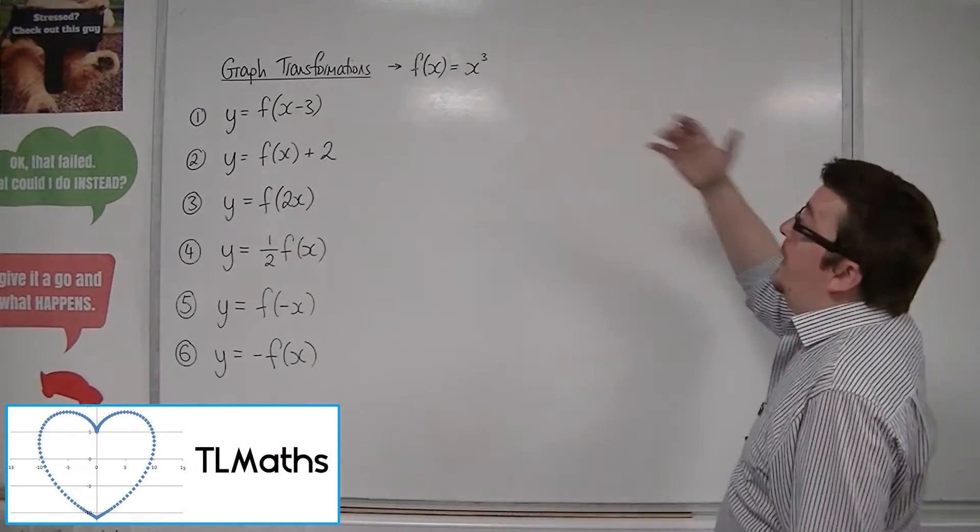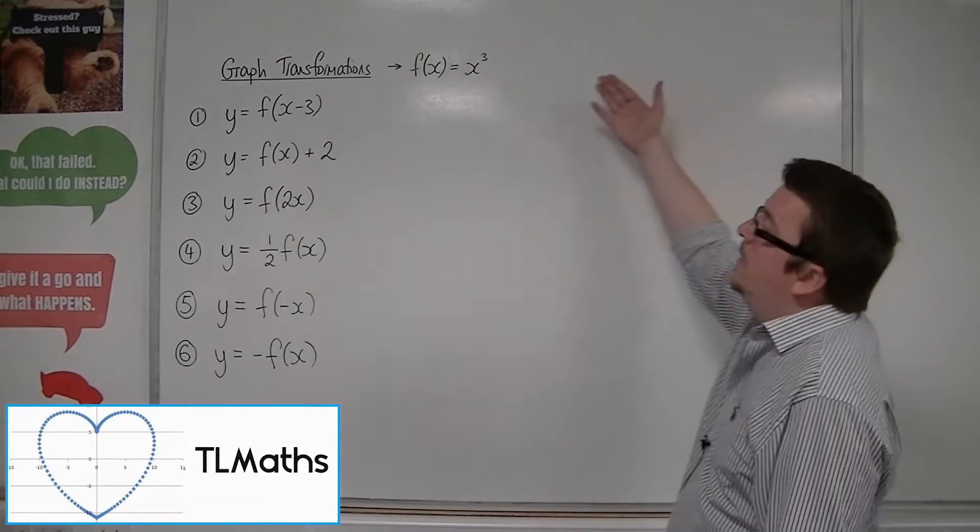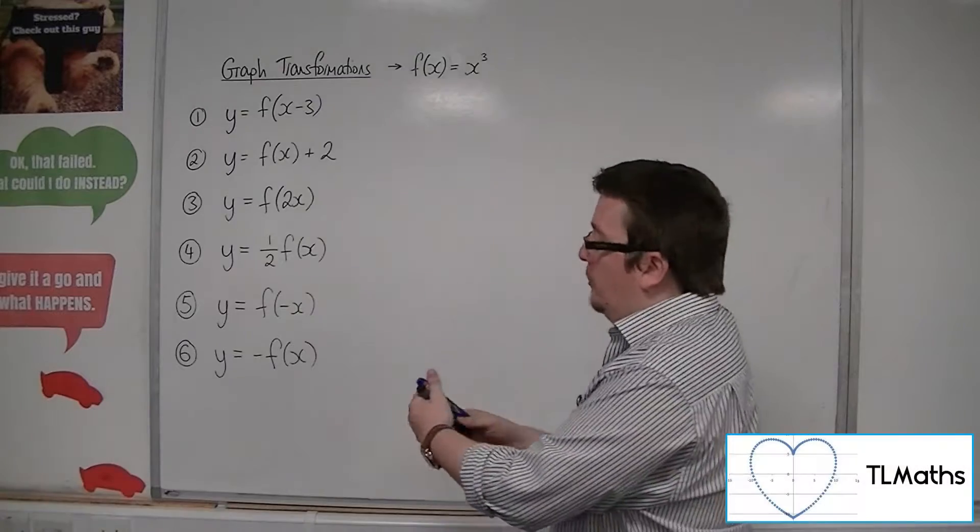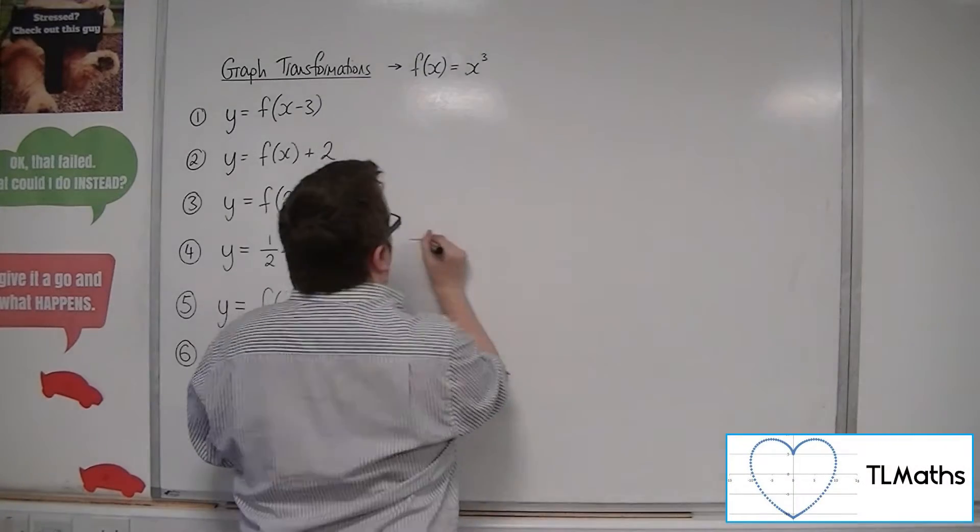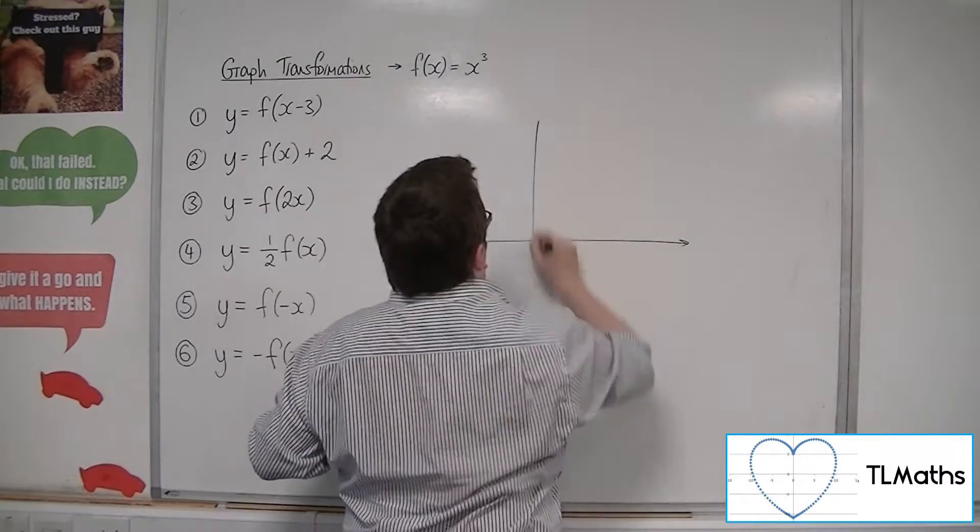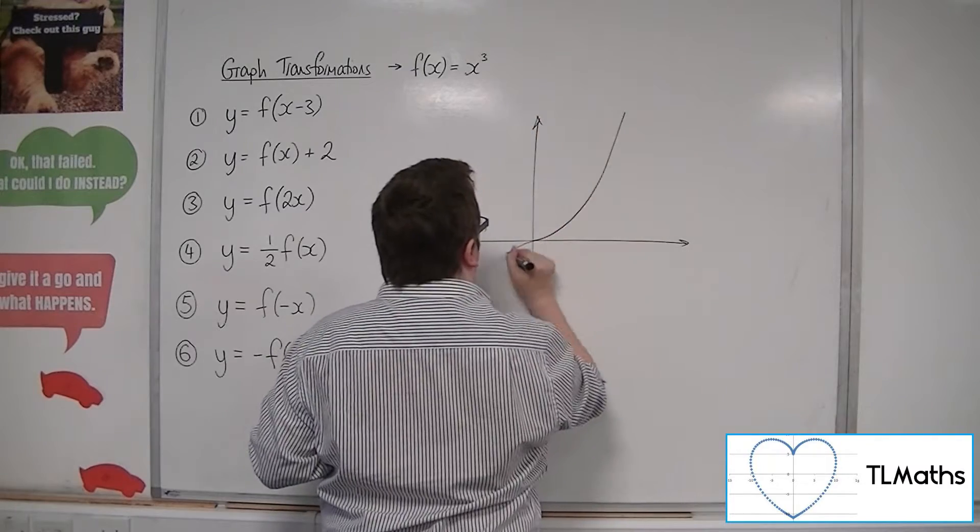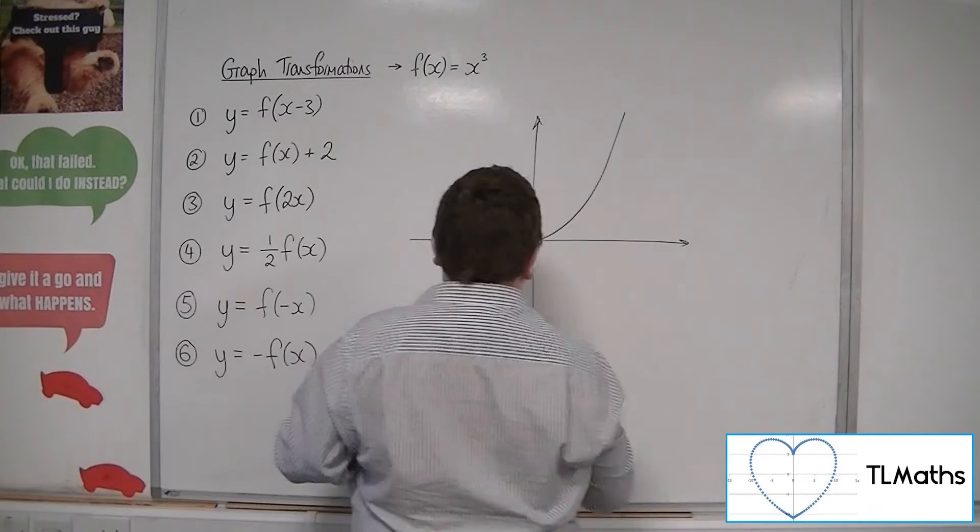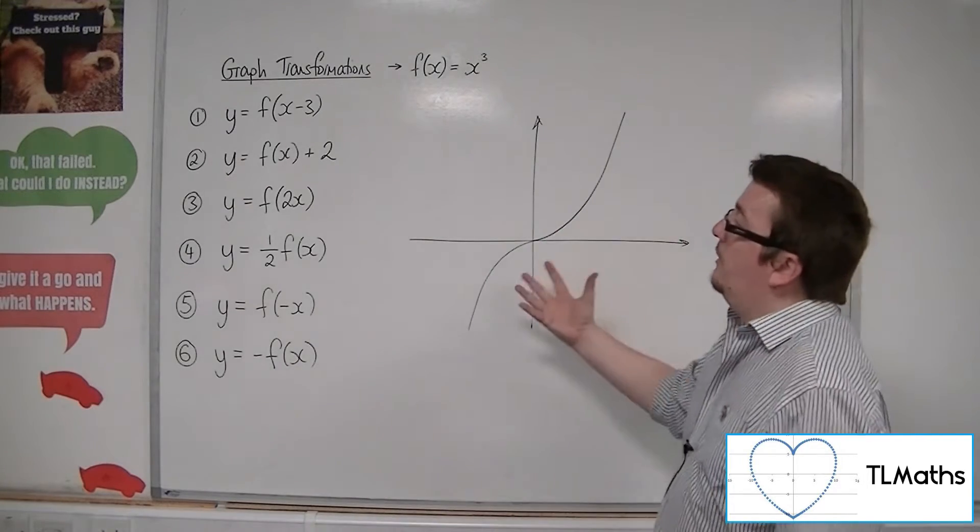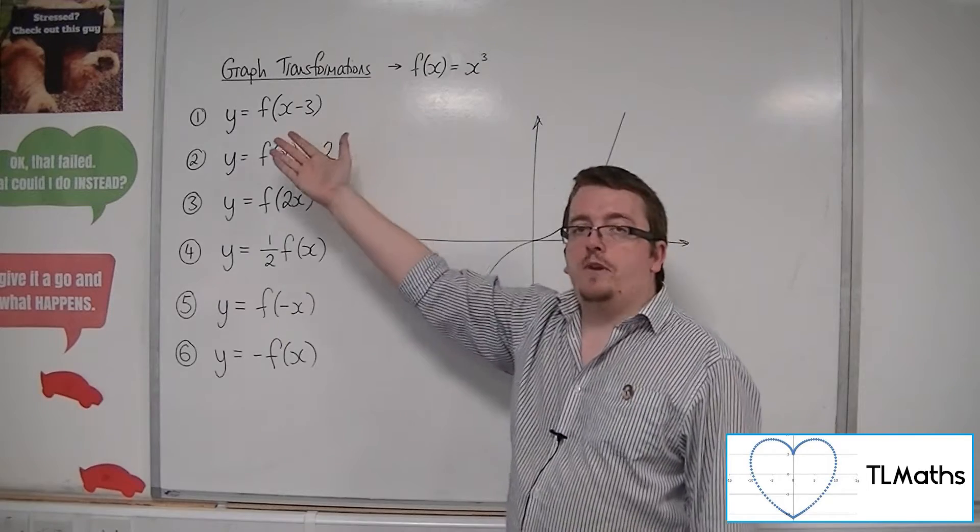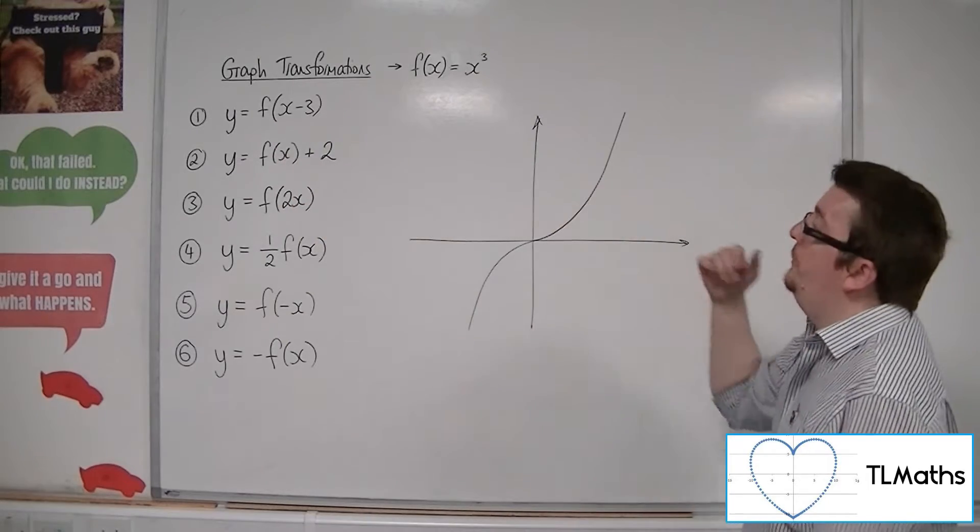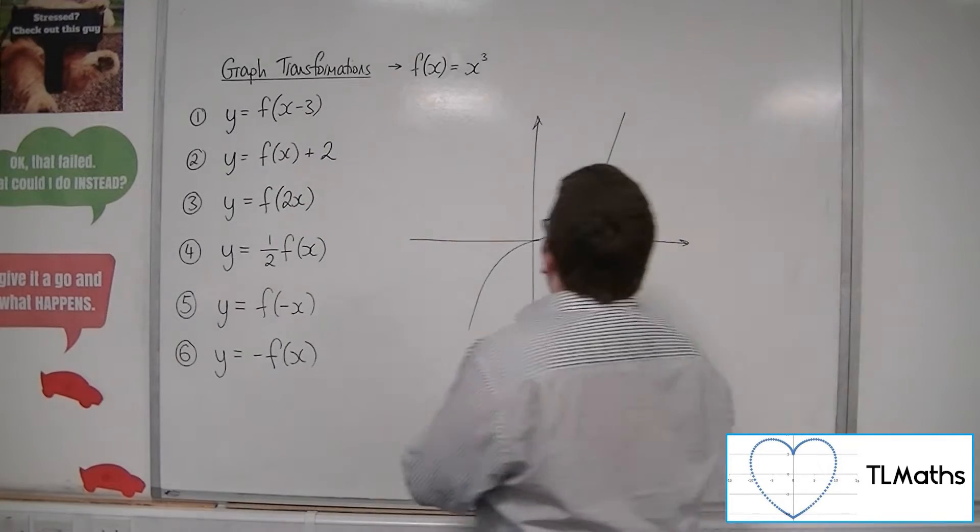Now we're going to look at f of x is equal to x cubed. So y equals f of x minus 3 to start off with. So here is x cubed. f of x minus 3 is a translation by the vector 3, 0. So our new curve,